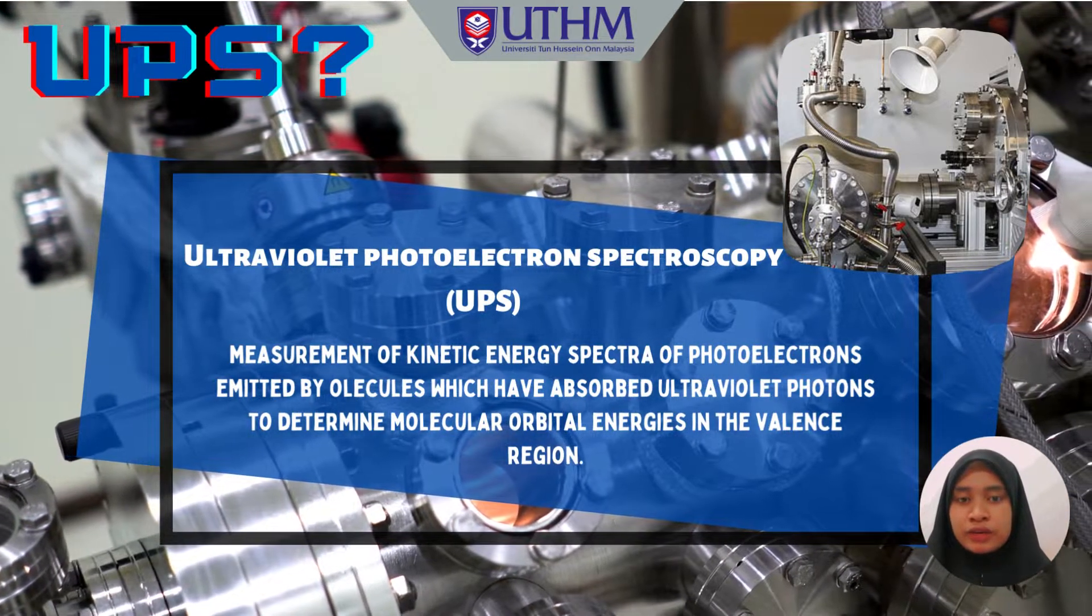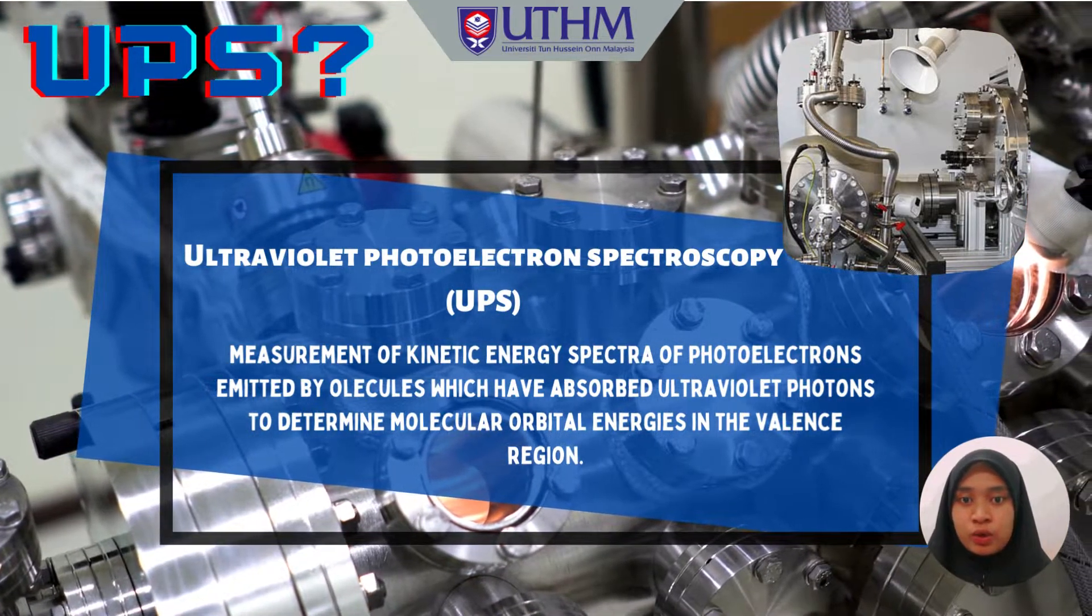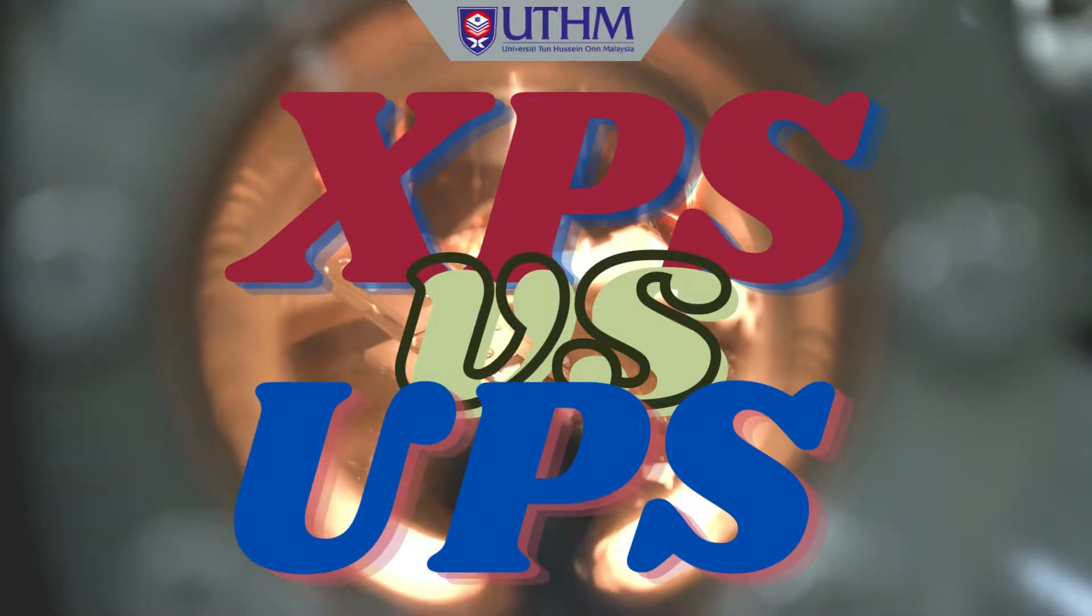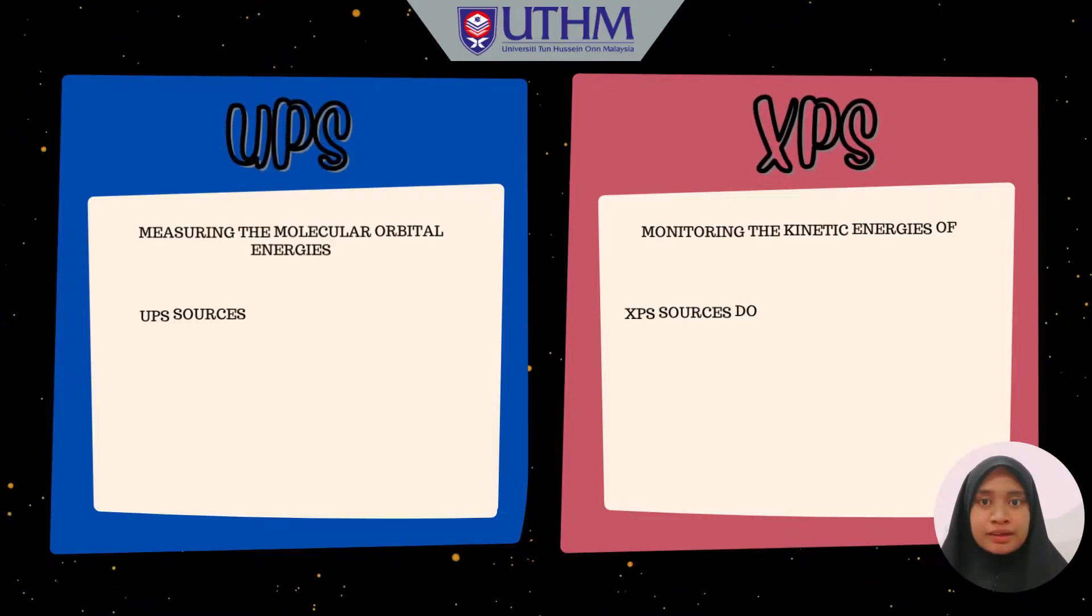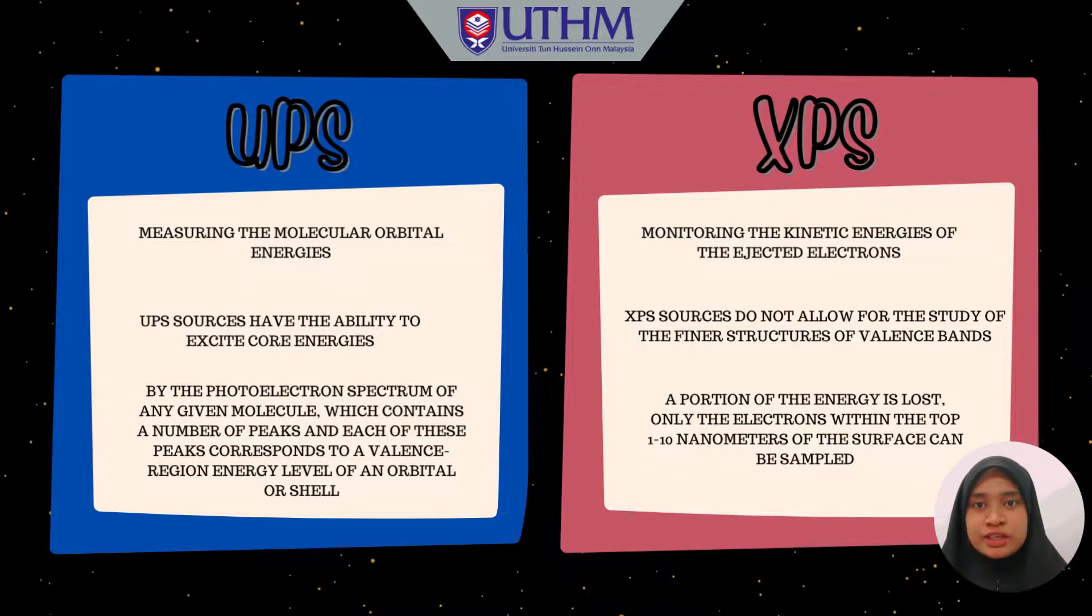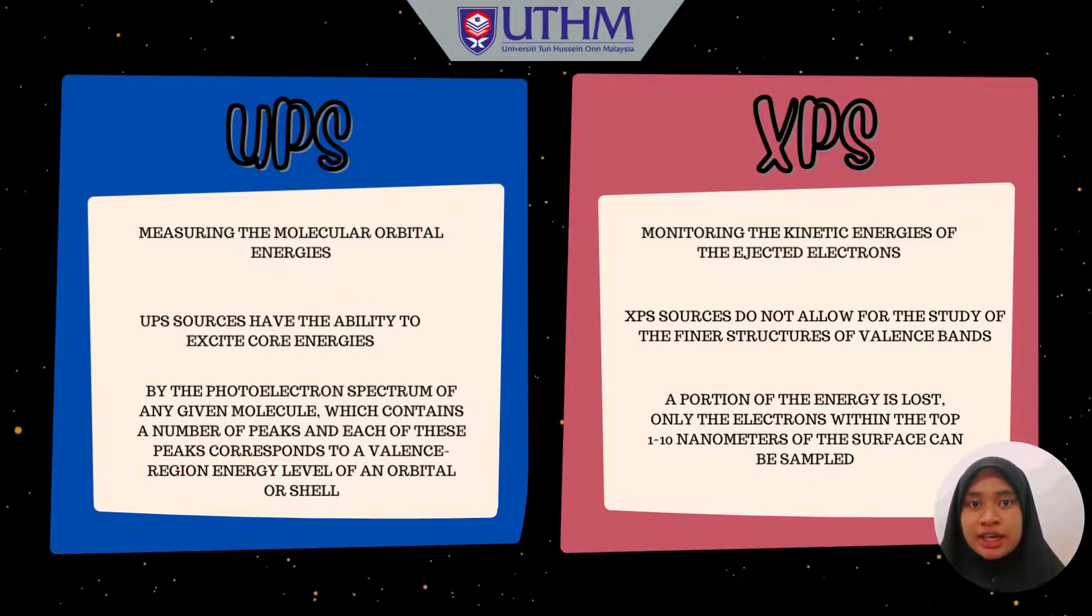Ultraviolet Photo-Electron Spectroscopy operates on the same principle as XPS. Now, let's see the difference between UPS and XPS. Firstly, UPS measures the molecular orbital energies while XPS monitors the kinetic energies of the ejected electrons.